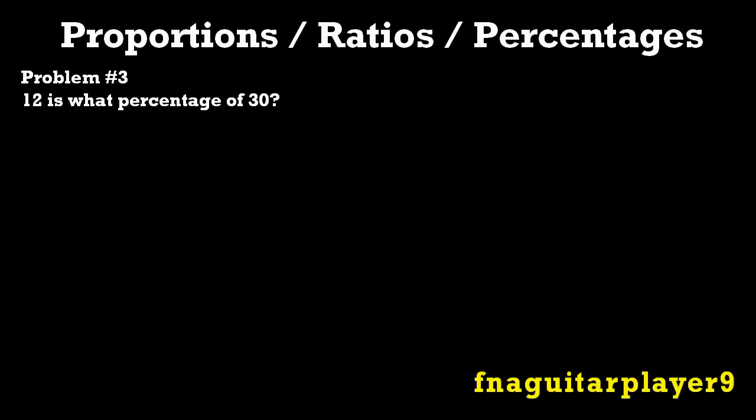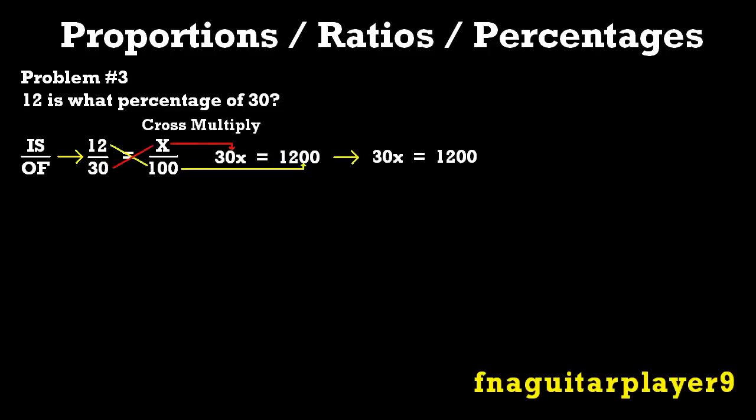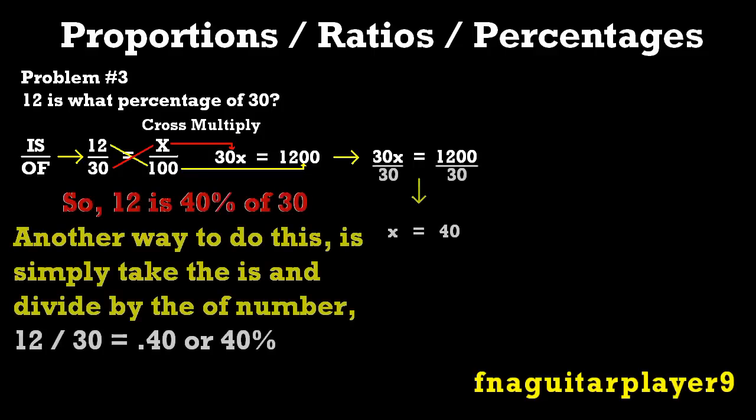Now this next problem, number three, is finding the percentage. So you know two numbers, and you're trying to find what percentage it is. So 12 is what percentage of 30? So you'd have 12 out of 30, or 12 over 30, which is IS over OF. So you'd have 12 over 30 equal to x over 100, because we don't know the percentage. But we know since it is a percentage, it's going to be a fraction over 100. So now you do the same cross multiplying, and you get 30x equals to 1200.